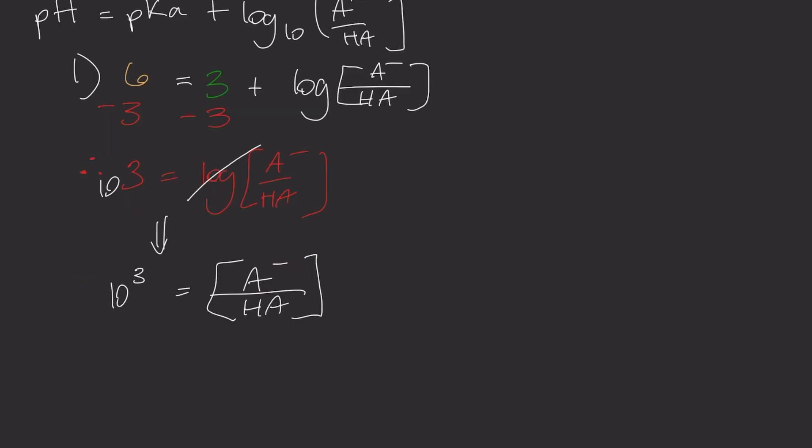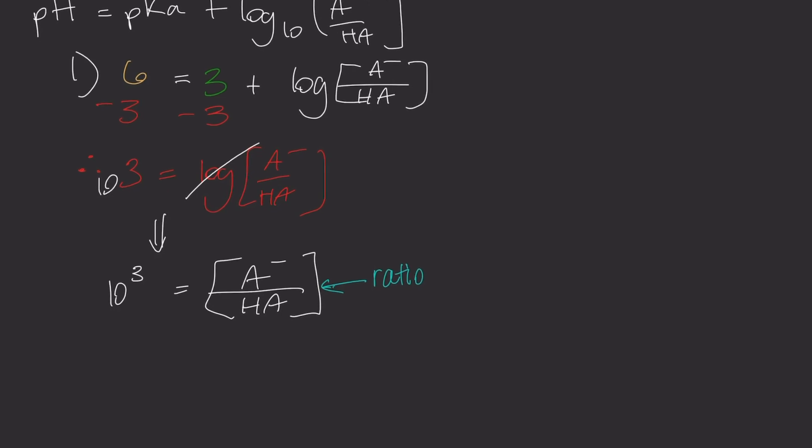Now, you should have 10 to the 3 or 1,000 equals A minus over HA. This fraction to the right side is a ratio to that of deprotonated base or A minus over protonated acid or HA. 10 to the 3 in ratio form can be rewritten as 1,000 over 1. Simply, this means that there is a ratio of 1,000 deprotonated base over 1 protonated acid.